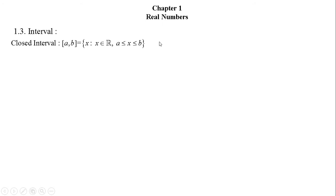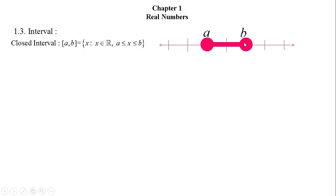It also can be expressed by the number line. Here, in a number line, A and B are the two numbers. And with the pink colored and bolded picture, I have shown all the numbers between A and B, including A and B. And this is the closed interval of A and B.